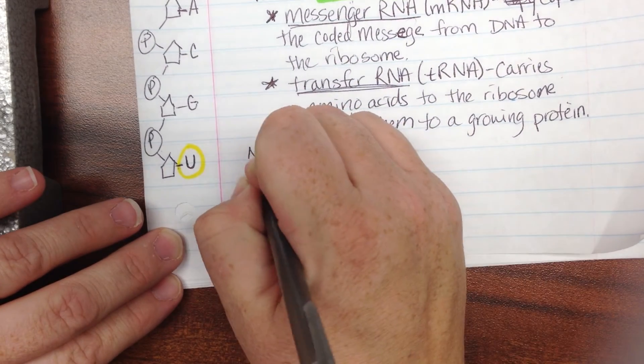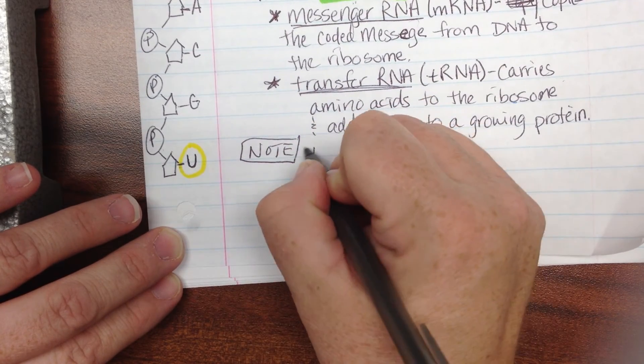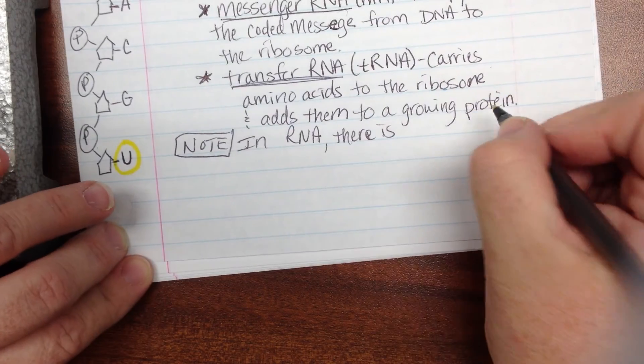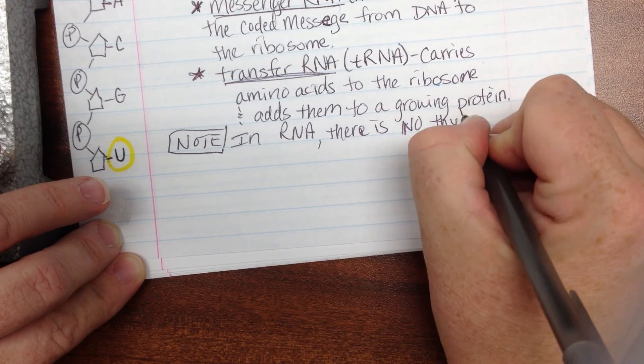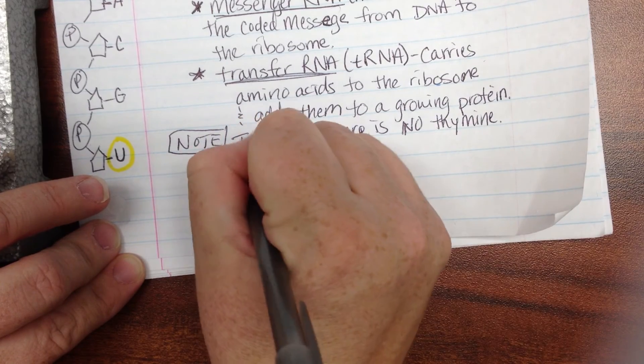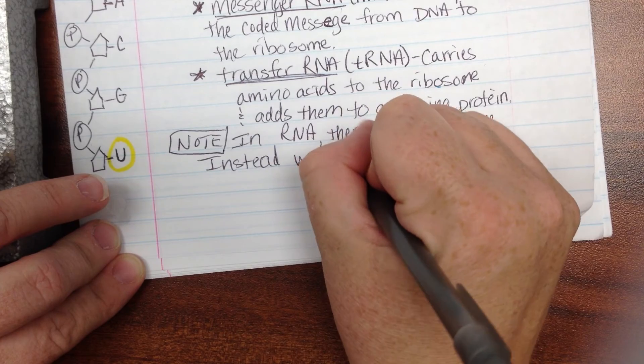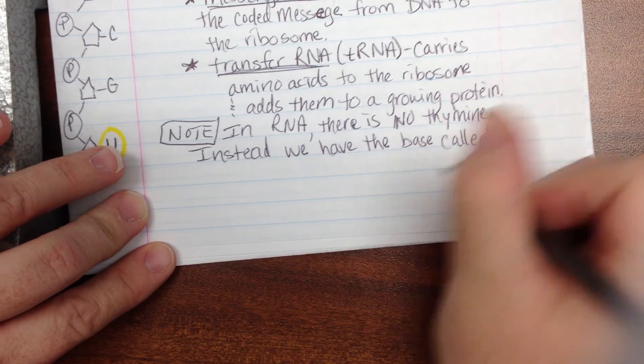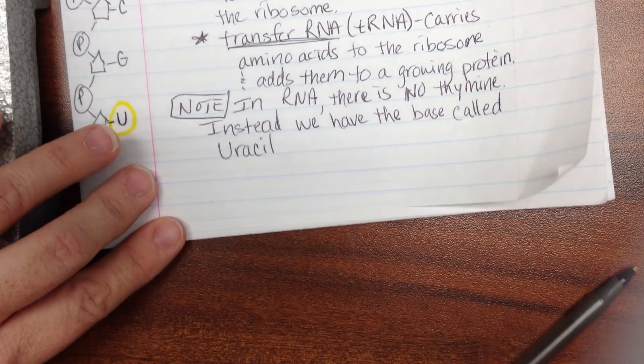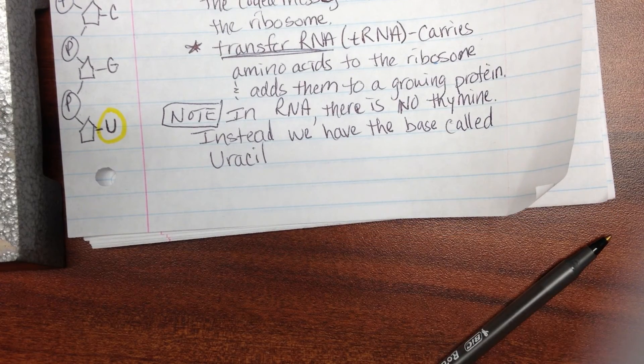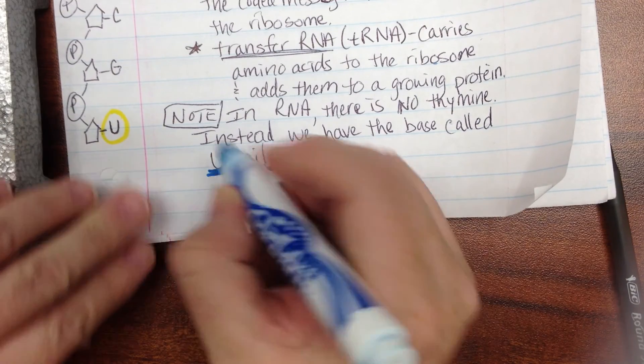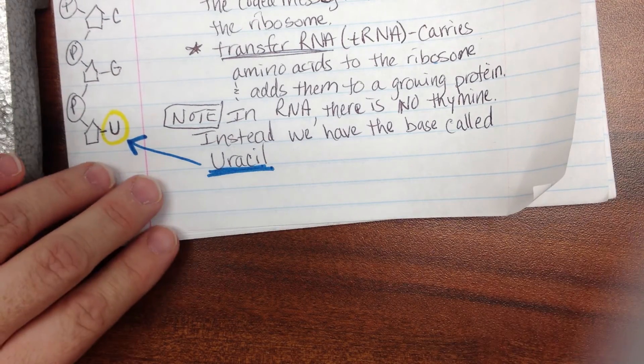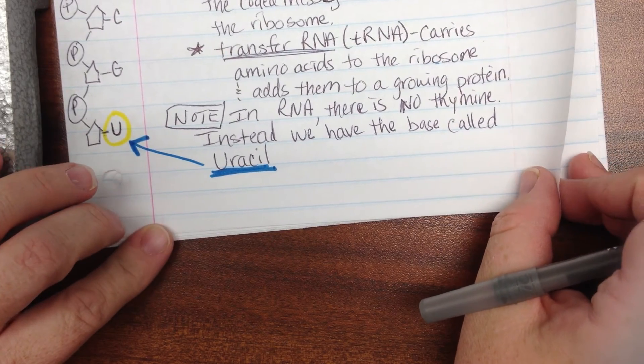I'm going to go ahead and make a note down here. In RNA there is no thymine. Instead we have the base called uracil, and again I'm going to emphasize that with some color. We're also going to look at some other differences here. I'm going to go ahead and need to move to the back side or to a new page so if you'll join me with that, I'm going to make a quick little chart here that's going to show the differences between DNA and RNA.